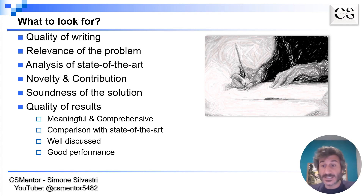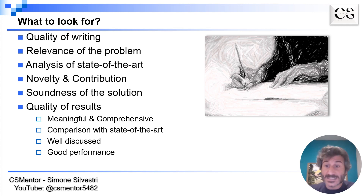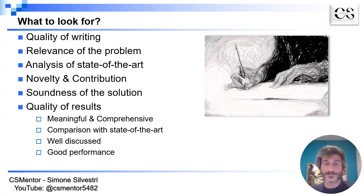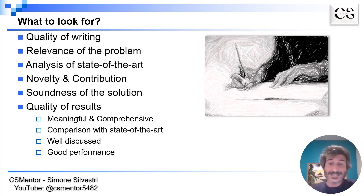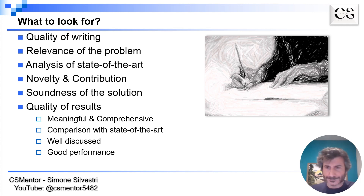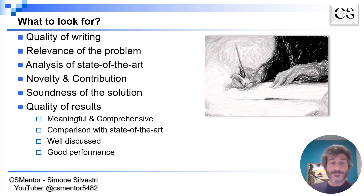What is the quality of the results? How have the results been generated — using a realistic simulator, real experiments, or perhaps homemade experiments under not very convincing assumptions? Are the results comprehensive, analyzing the problem from many different dimensions to assess performance in a variety of contexts? Is there a comparison with the state of the art? This is not necessarily a requirement, but it is generally very appreciated. Are the results well discussed — do the authors explain the trends observed, including any unusual behavior of algorithms? Are the performance results good enough to justify the contribution of the paper?